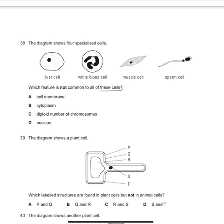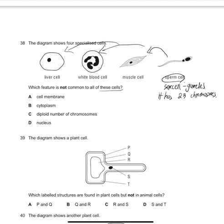Because sperm cell, it's a sex cell we call it gametes, it has 23 chromosomes. So it's different to other cells like those cells. So the answer will be C.